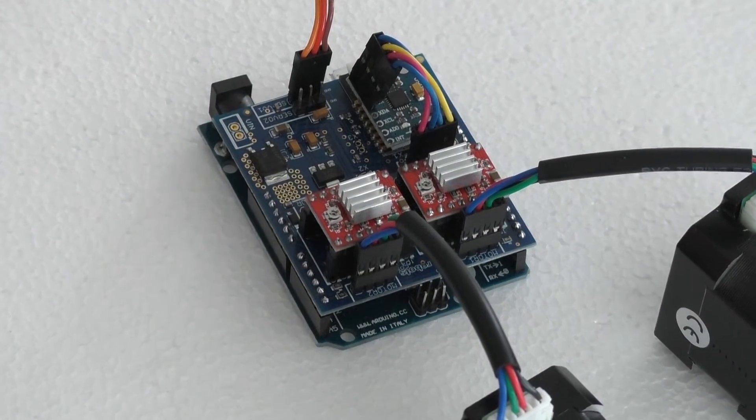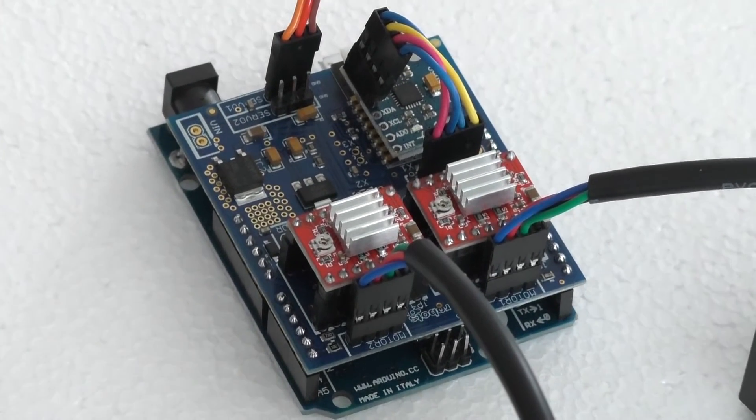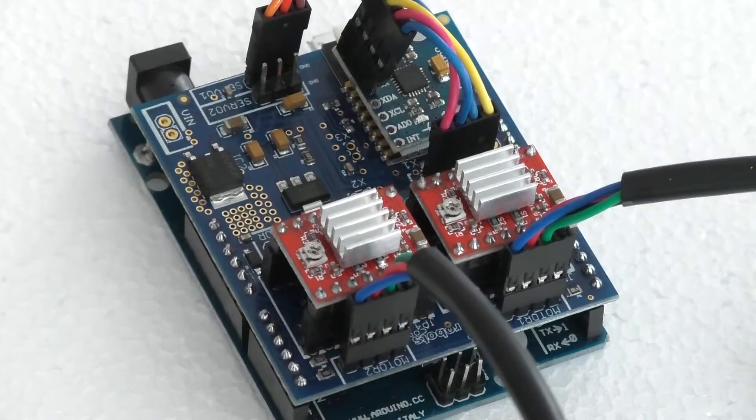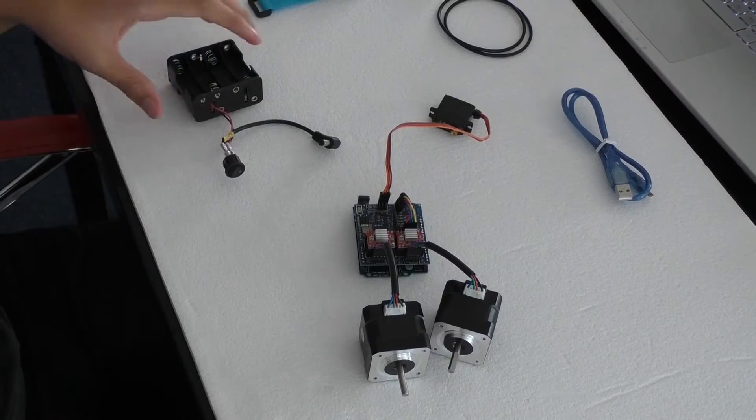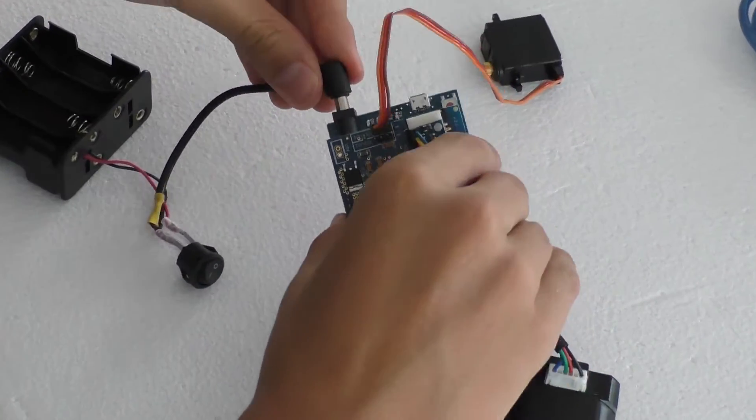If you find your motors going the wrong way, you can always switch around the cables. Now, you're going to attach the battery box to the Arduino, plugging it into the power port.